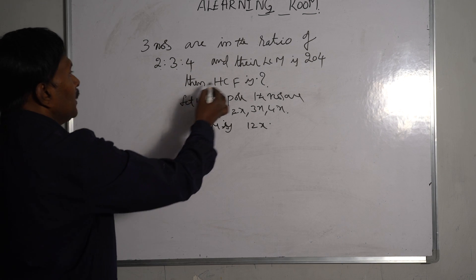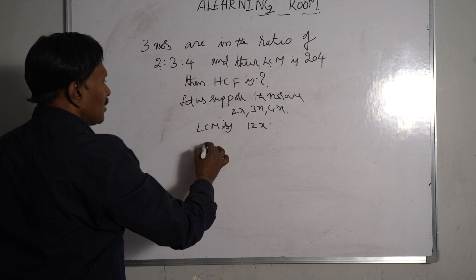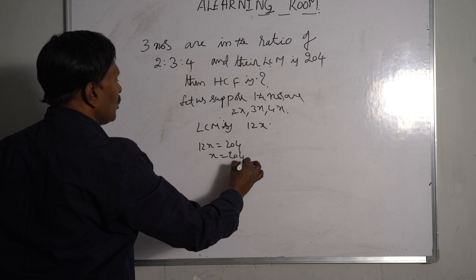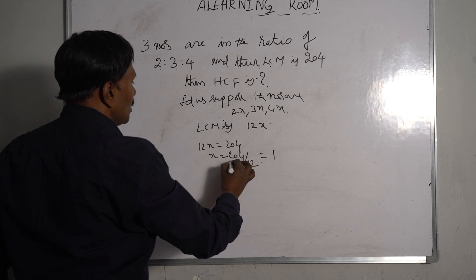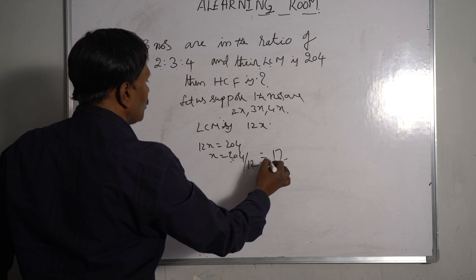So according to this problem, LCM is 204. It means 12x equals 204, x equals 204 divided by 12. See, 12 sevens are 84. So x equals 17.